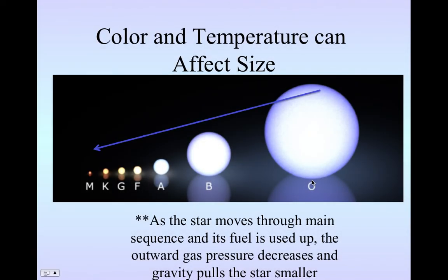Color and temperature can affect size. So you'll see here with my O, as I move through main sequence, what's happening to my size? I'm decreasing because I'm using up all that fuel. So my outward gas pressure is decreasing, which means gravity is pulling my star smaller and smaller and smaller. So this is main sequence. And then what happens after M is I explode outwards into my giant, either red giant or red supergiant stage of the star.